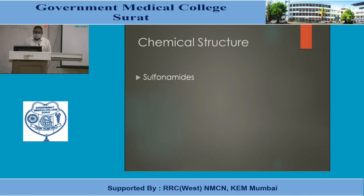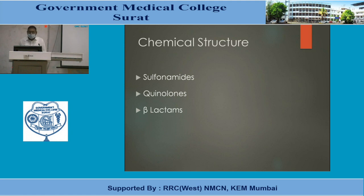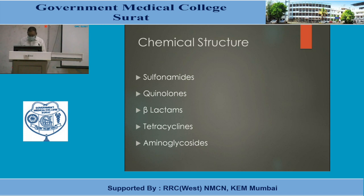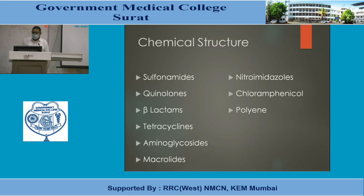According to chemical structure, antimicrobials are classified as: sulfonamides (e.g., sulfapyridine), quinolones and fluoroquinolones (e.g., ciprofloxacin), beta-lactams (e.g., penicillin), tetracyclines (e.g., doxycycline), aminoglycosides (e.g., streptomycin), macrolides (e.g., erythromycin), nitroimidazoles, chloramphenicol, polyenes, azole derivatives, and many more groups.